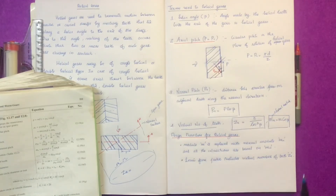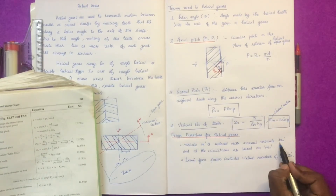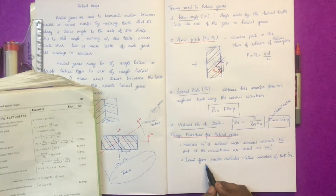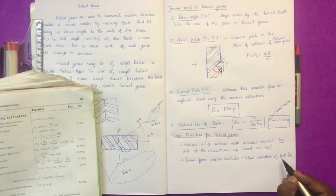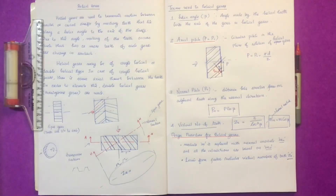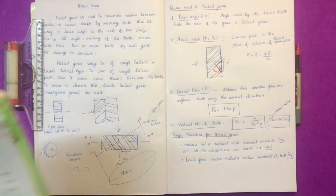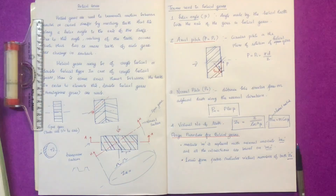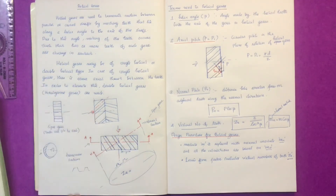The design procedure for helical gears is the same as for spur gears. All calculations are based on the normal module m_n and the Lewis equation form factor using the virtual number of teeth z_e. An additional step in the design procedure accounts for the helical geometry.